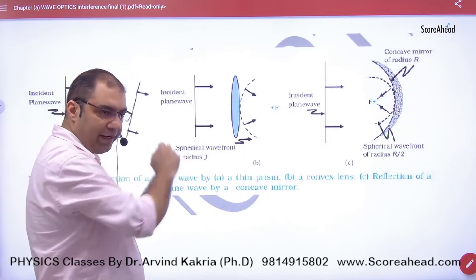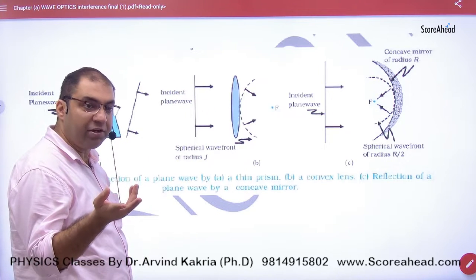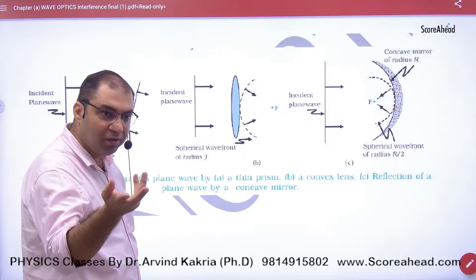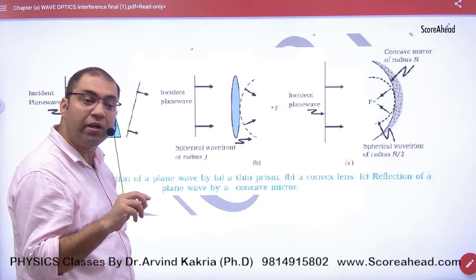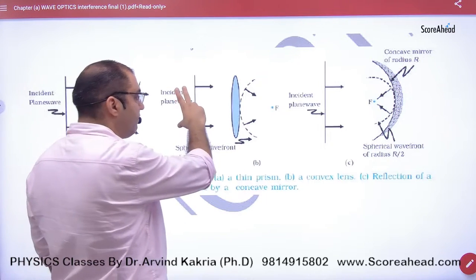If the wavefront is plane, then there is an obstacle. Last time we discussed that the obstacle is complex - the obstacle is not a mirror, the obstacle is a lens. So this plane wavefront encounters a lens.